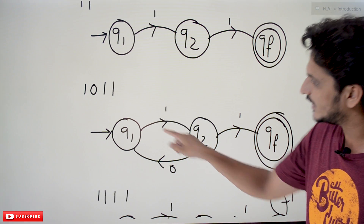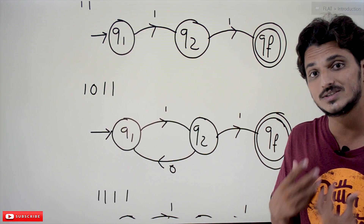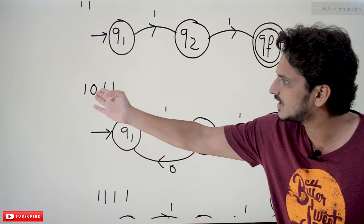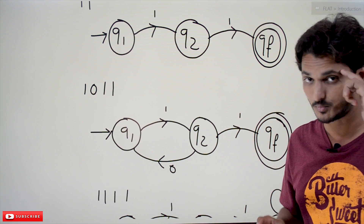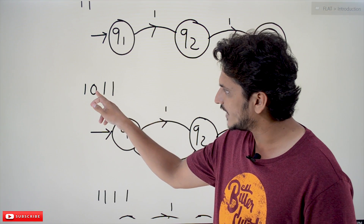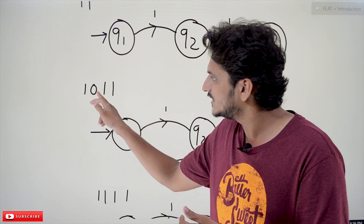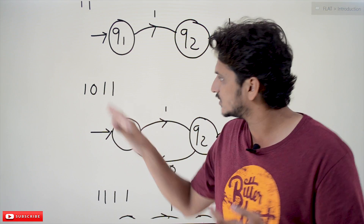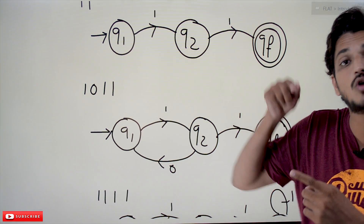Coming to the next one: if your input string is like one-zero-one-one, whenever you see the one we move to q2 state. Whenever you see zero on q2 state — our logic is to find two consecutive ones that should be at the end of the string. We don't know whether this is the last input or the middle input; we just check the input because we don't have memory. So whenever we find zero on q2, we move to q1, because we need to find again two consecutive ones.